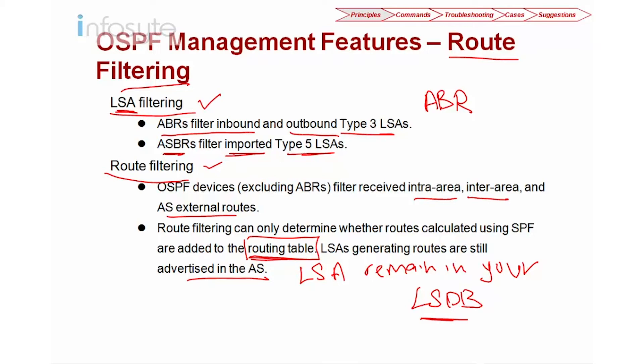The key difference is: with LSA filtering you will not see the LSA inside your LSDB at all, but with route filtering the LSA still remains in your LSDB — it only filters what gets added to the routing table. You need to know which situation calls for LSA filtering versus route filtering.